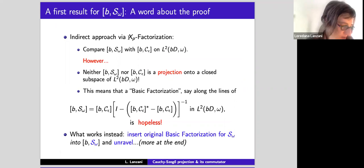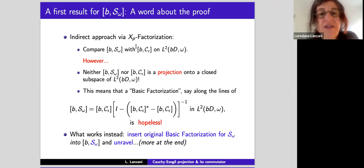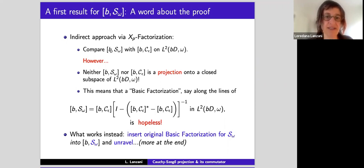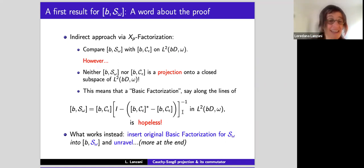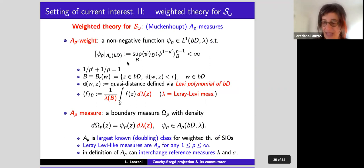Just a word about the proof. We had this factorization argument for Hilbert space — one would like to apply the same kind of factorization to the commutators: comparing the commutator of the operator you don't know about with the commutator of the operator you do know about. But in the basic argument, you have to work with projections, and neither of these commutators is a projection. So there is no chance of obtaining a basic factorization along these lines. The only thing that works is to take the basic factorization of the projection itself, put it in for the projection inside the commutator, unravel, and see what you get. Thank you for your patience.